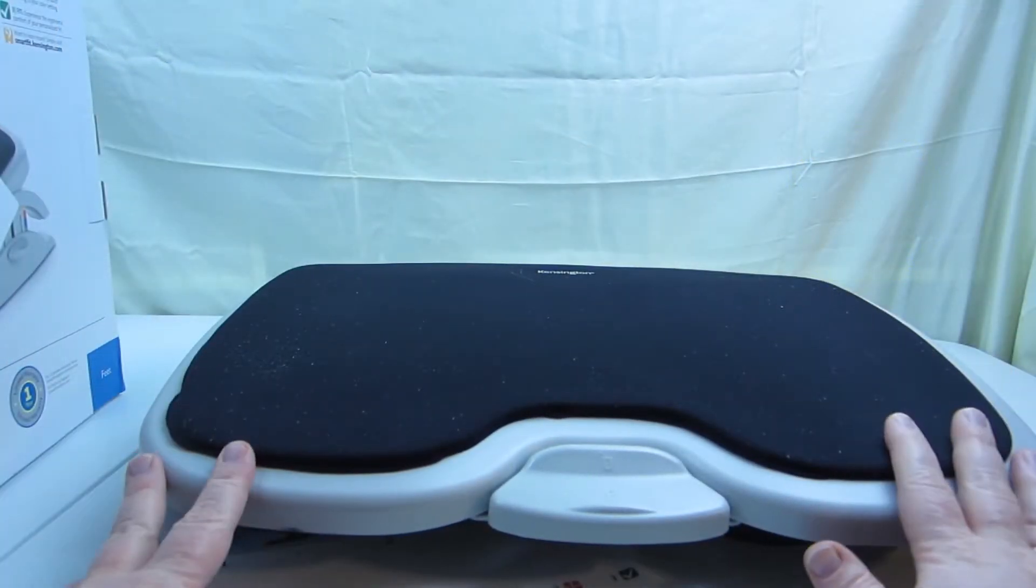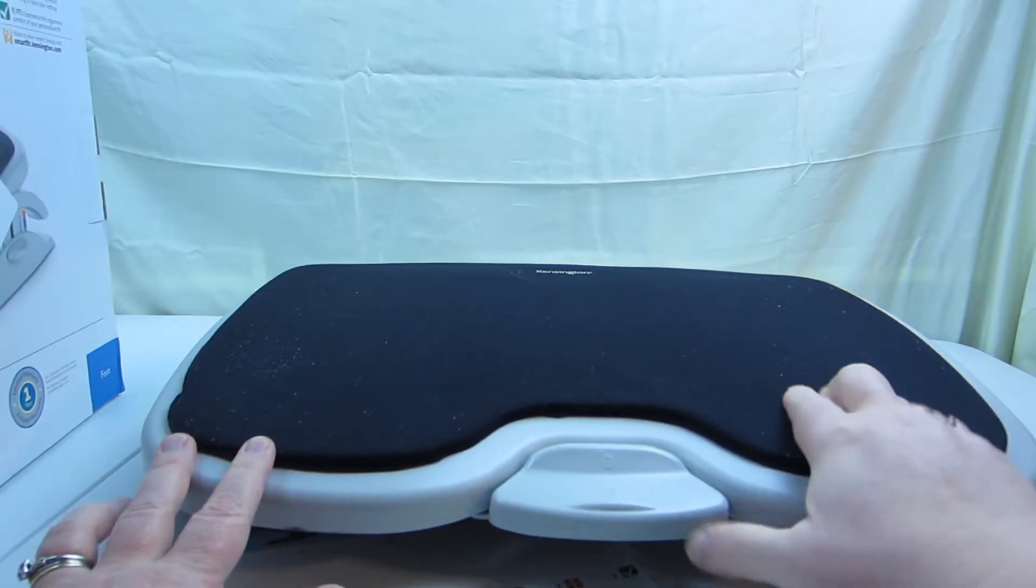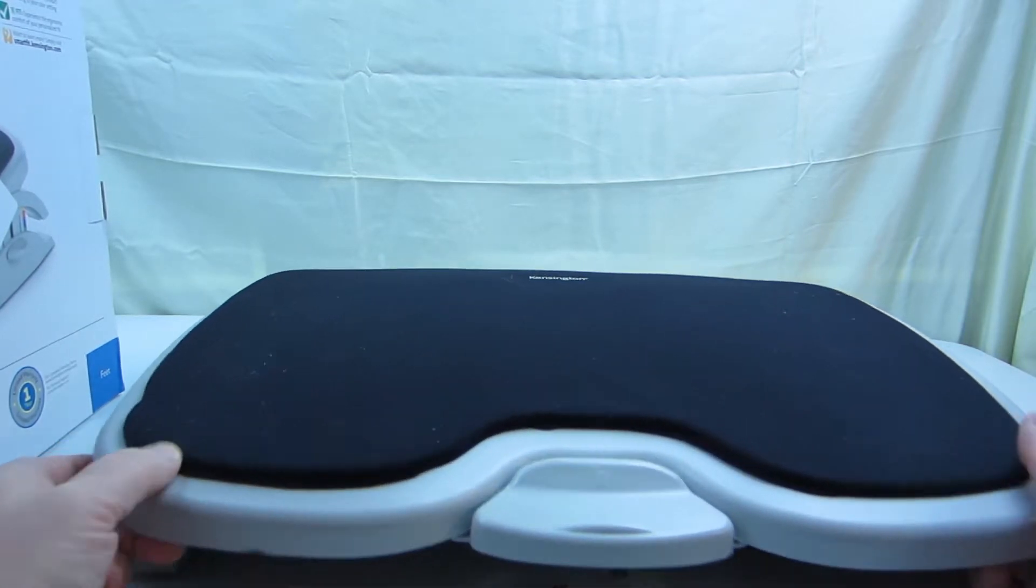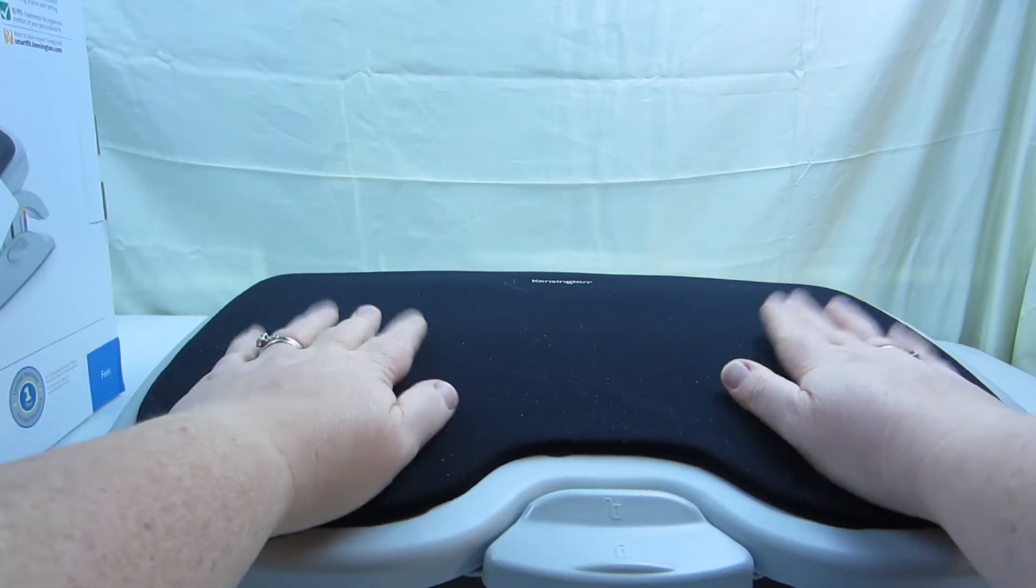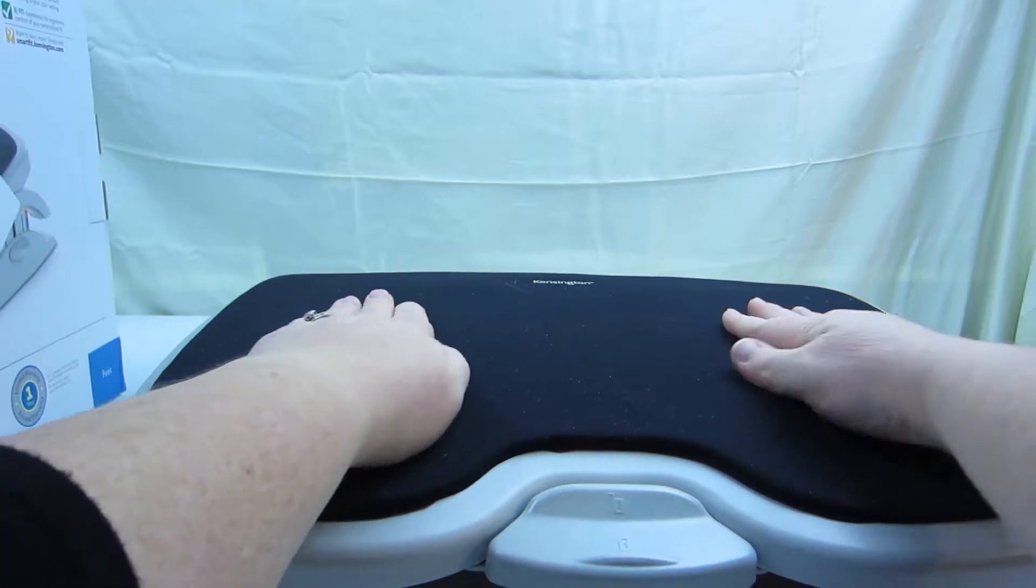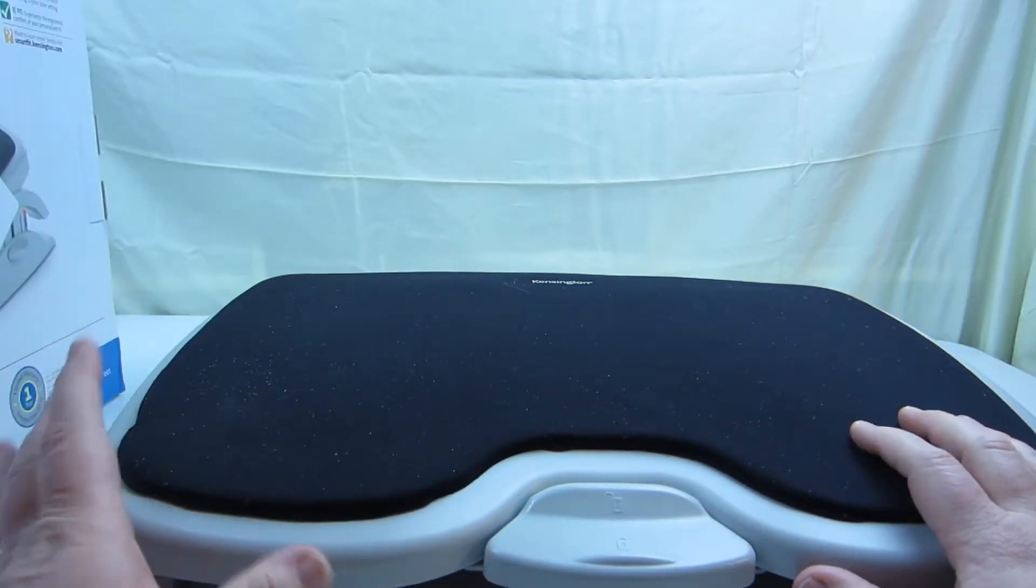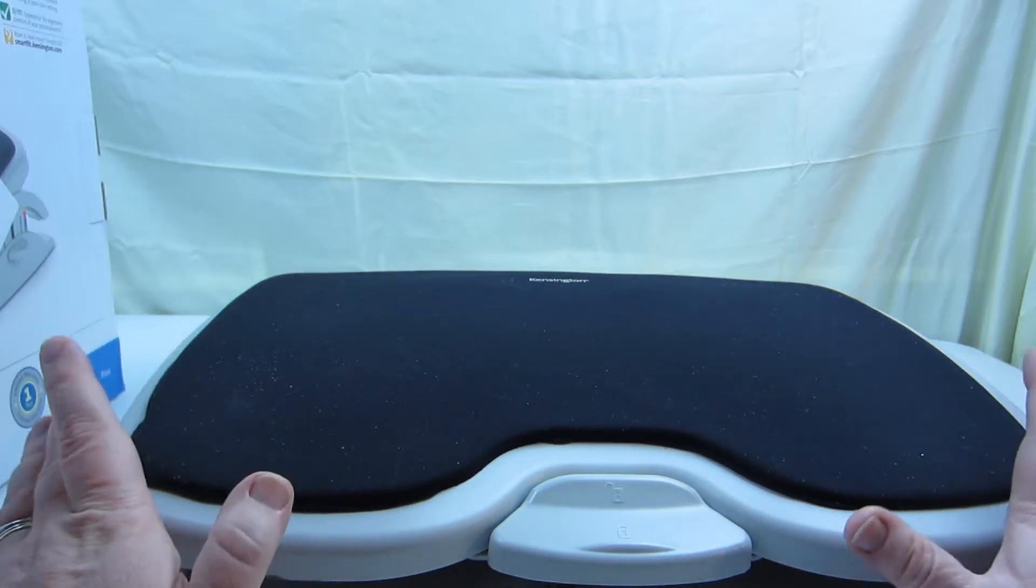So here's what we've got. This is the footrest. This is the memory foam surface. It's pretty soft, but still firm. I'm not a huge fan of memory foam, as I said, because I like to move and fidget a lot. So if I rest my feet here for a long time and then I decide to move them over a little bit, there's a little divot here until the memory foam firms back up. I'm not a huge fan of that, but it's not bad.